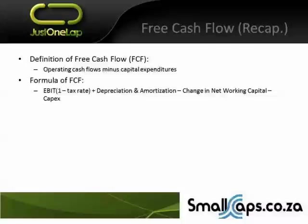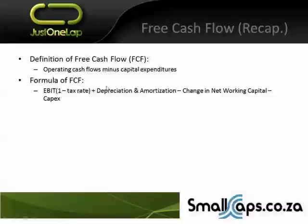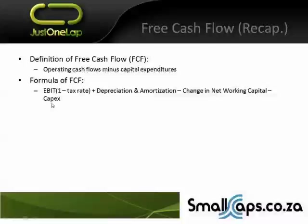A quick refresh on free cash flow. The definition is operating cash flow minus capital expenditure. The formula is: EBIT (earnings before interest and tax) put post-tax — so one less the tax rate — giving post-tax EBIT, which is another name for operating profits. Then you add depreciation and amortization because they're non-cash items, and you deduct the change in working capital because it's a financing cost that absorbs cash flows. Finally, you subtract capex because you're spending real cash — buying property, plant, land — to build the business.